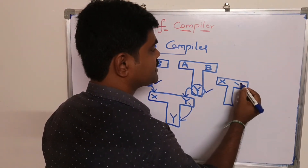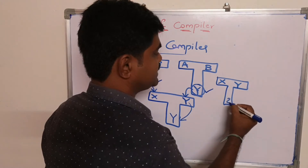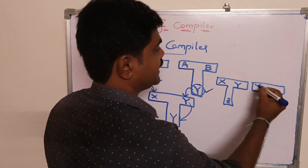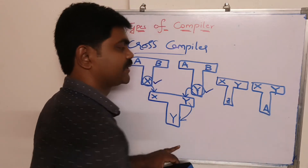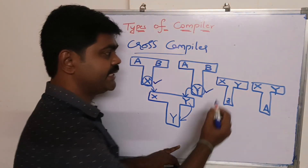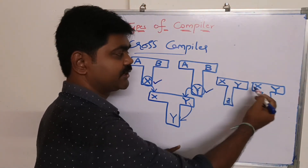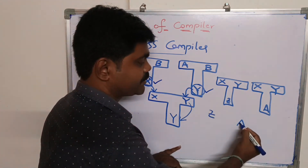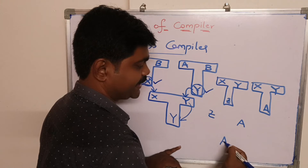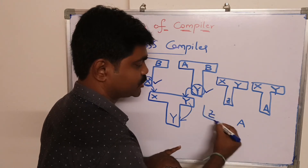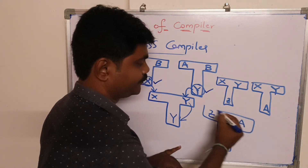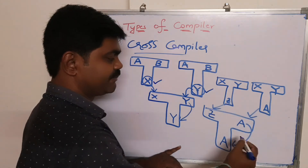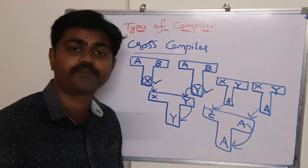Let's see another example. If I have compilers X Y Z and X Y A, here X and Y are source and target and both are the same. So Z becomes my source, A becomes my target, and A becomes my implementation. So this is my cross compiler.